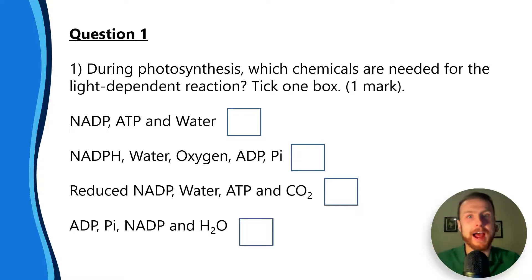Then see if you got it right afterwards. I'm going to dissect why that is the right answer after each question as well. So the answer is ADP, Pi, NADP, and H2O. During the light dependent reaction, ADP is converted to ATP in photophosphorylation. We need the Pi to combine to the ADP with ATP synthase. The NADP takes on hydrogen ions from water to form reduced NADP, and we need the water for photolysis.